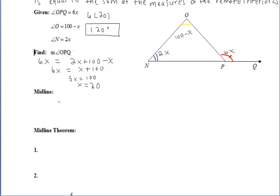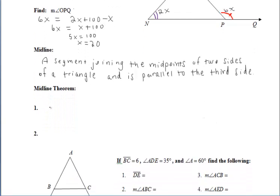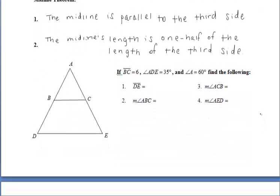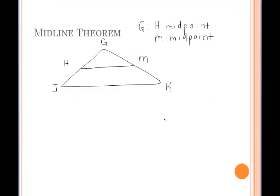Now we have another theorem to discuss: the midline theorem. A midline is a segment formed by joining the midpoints of two sides of a triangle, and this segment is parallel to the third side. The midline is parallel to the third side, and the midline's length is one-half the length of the third side. To show where this theorem comes from, let's extend line HM through point M to some point P so that segments MP and HM are congruent. Point P and point K then determine line PK.